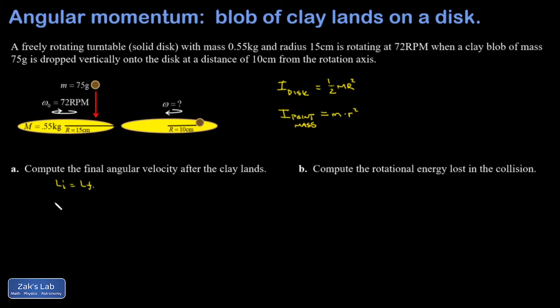So my initial state looks like this: I initial, omega initial. Final state: I final, omega final.